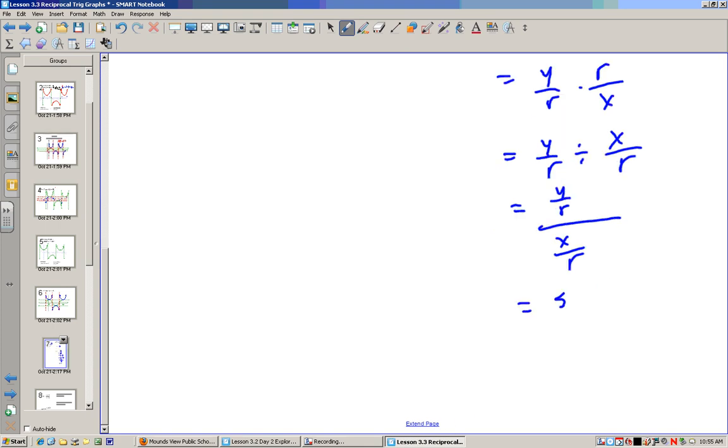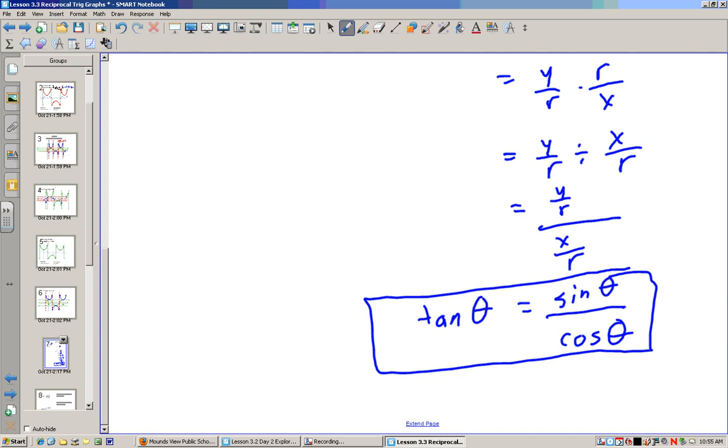Now remember, y over r is sine of theta. x over r is cosine of theta. So we just proved that the tangent of theta is equal to the sine of theta over cosine of theta.